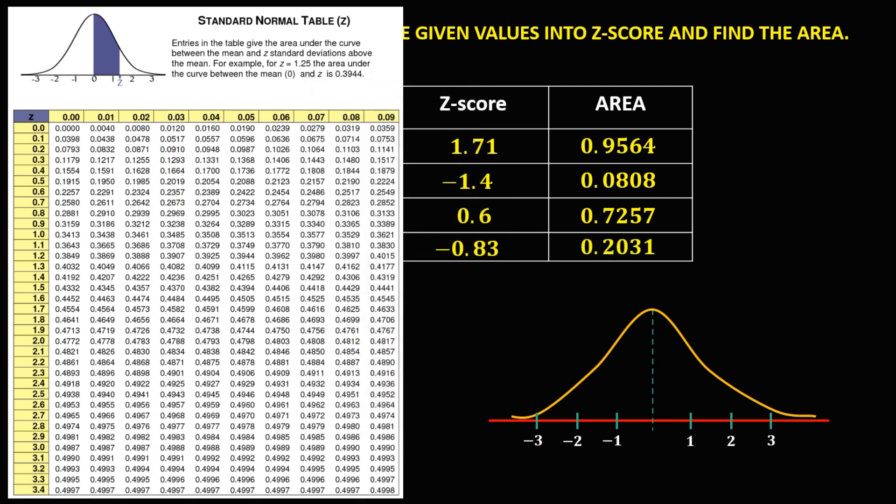This is how to find the area from the Z-score. For a positive Z-score, you need to add 0.5 to the table value. For a negative Z-score, you need to subtract the table value from 0.5.